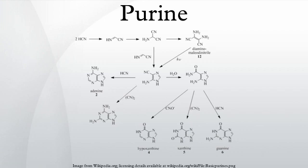Uric acid was reacted with PCl5 to give 2,6,8-trichloropurine, which was converted with HI and phosphorus to give 2,6-diiodopurine. The product was reduced to purine using zinc dust. Purines are also much larger than pyrimidines.